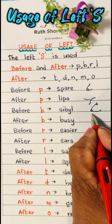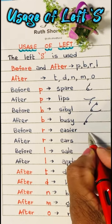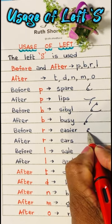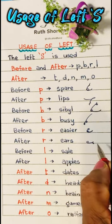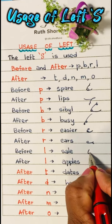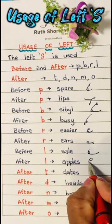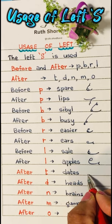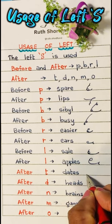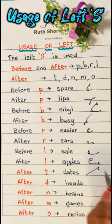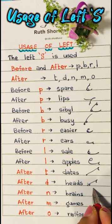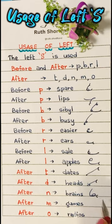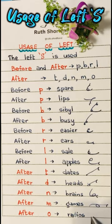B, C: easier. Ears. Sail. Apples, dates — D and T on the same line — dates, heads, brains, games, radios.